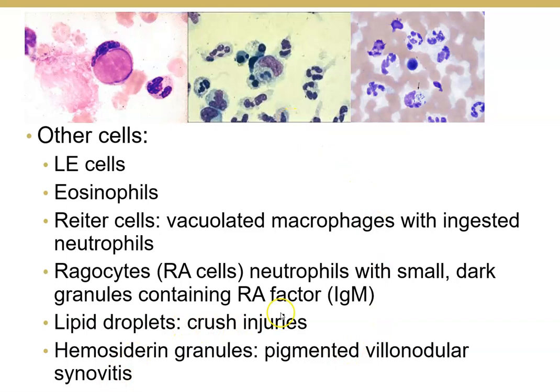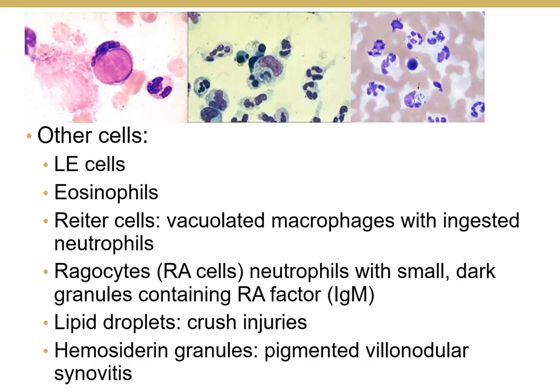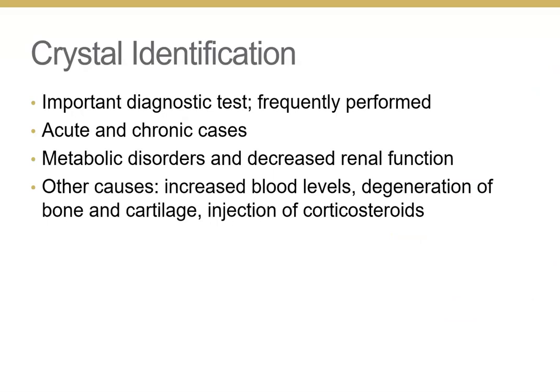You might also see lipid droplets from crush injuries where bone is broken and lipid from yellow marrow enters the capsule. Hemosiderin granules can appear with iron overload. You must be able to identify crystals present and distinguish whether they are uric acid (gout) crystals or pseudogout crystals. At this stage it's not a pH-related issue.